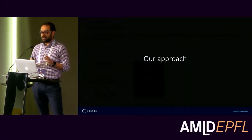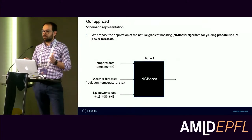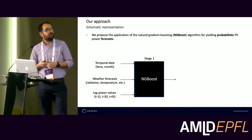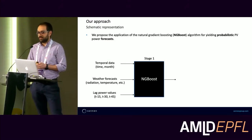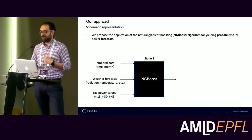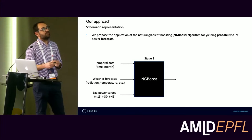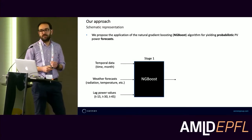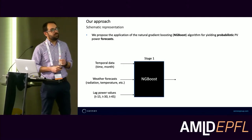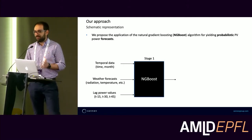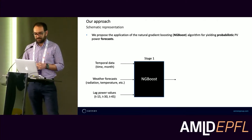To tackle this issue, we propose a two-stage forecasting approach. In the first stage, we apply natural gradient boosting to yield probabilistic PV power forecasts. To do so, we use simple temporal data such as information about the month, some weather forecasts, and three lag power values — the power generation 15 minutes, 30 minutes, and 45 minutes before — with a 15-minute granularity in our dataset.